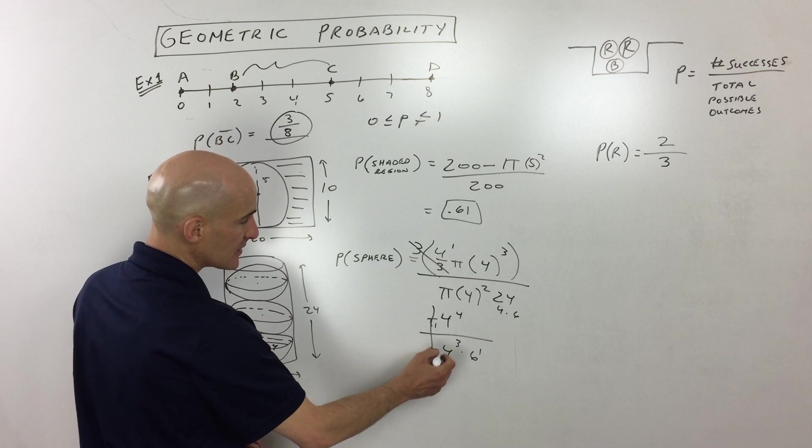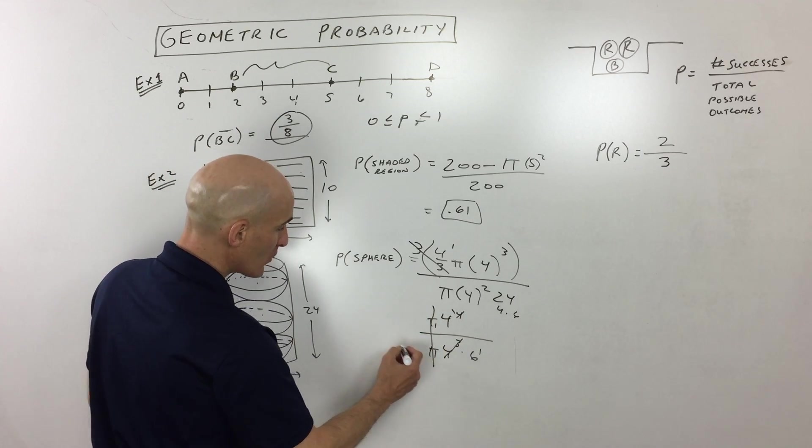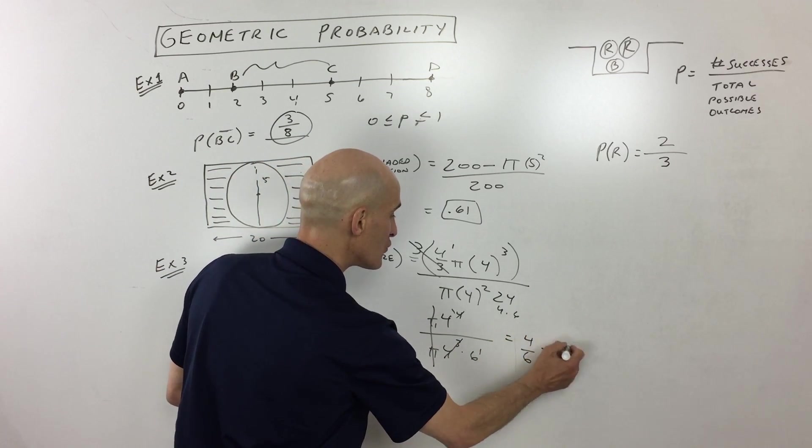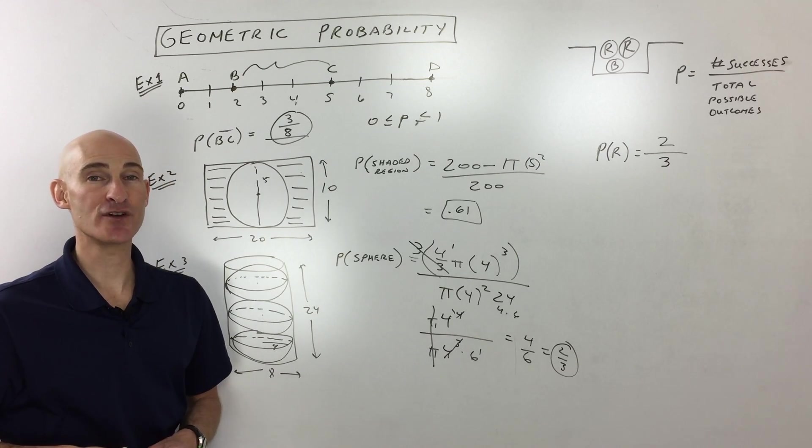And then you can see the pies are canceling. Three of these fours cancel with three of these fours, leaving one left over. So we end up getting four divided by six, which is equal to two thirds. So that's our probability of picking a point at random in here and that you end up inside of the sphere.